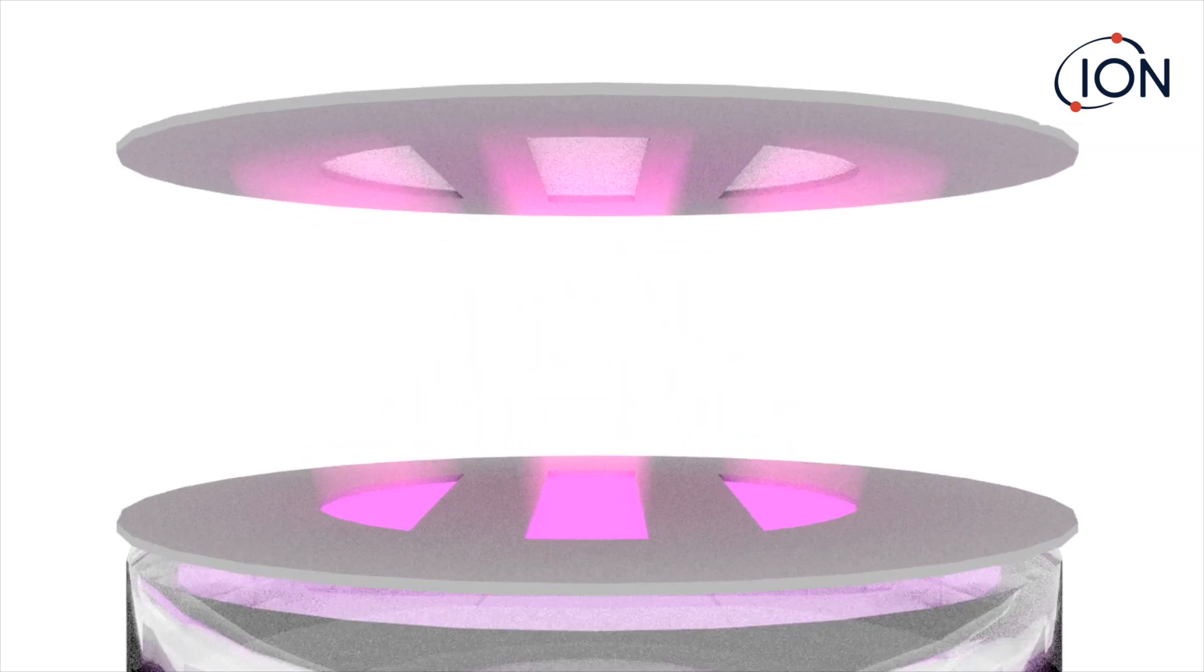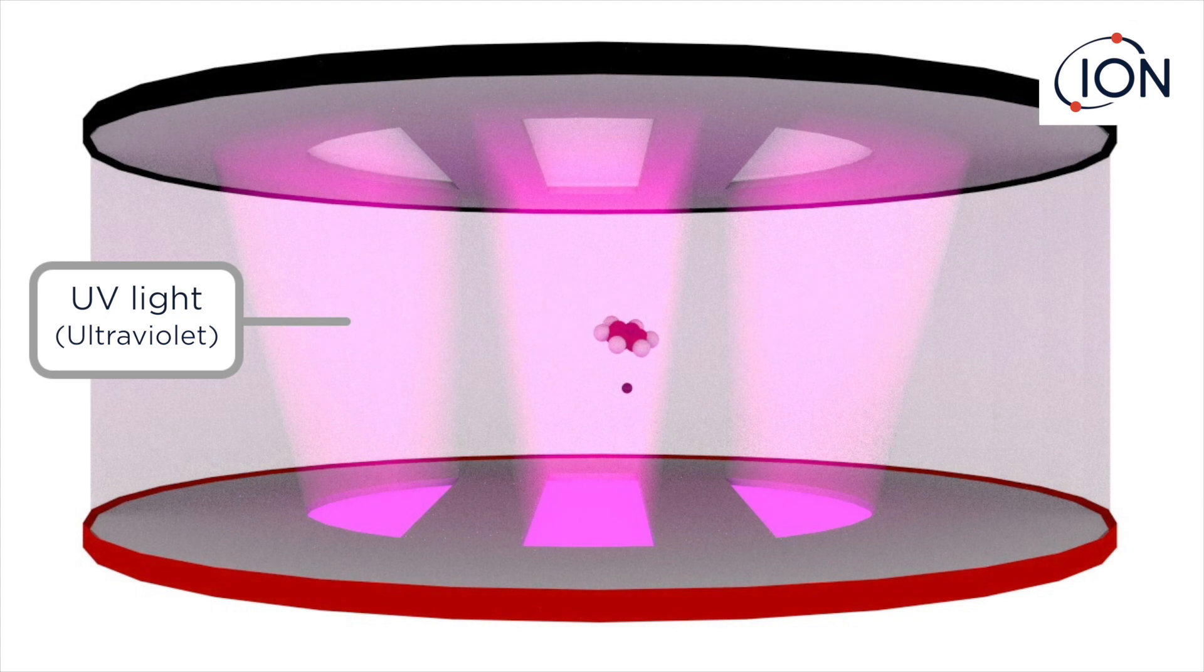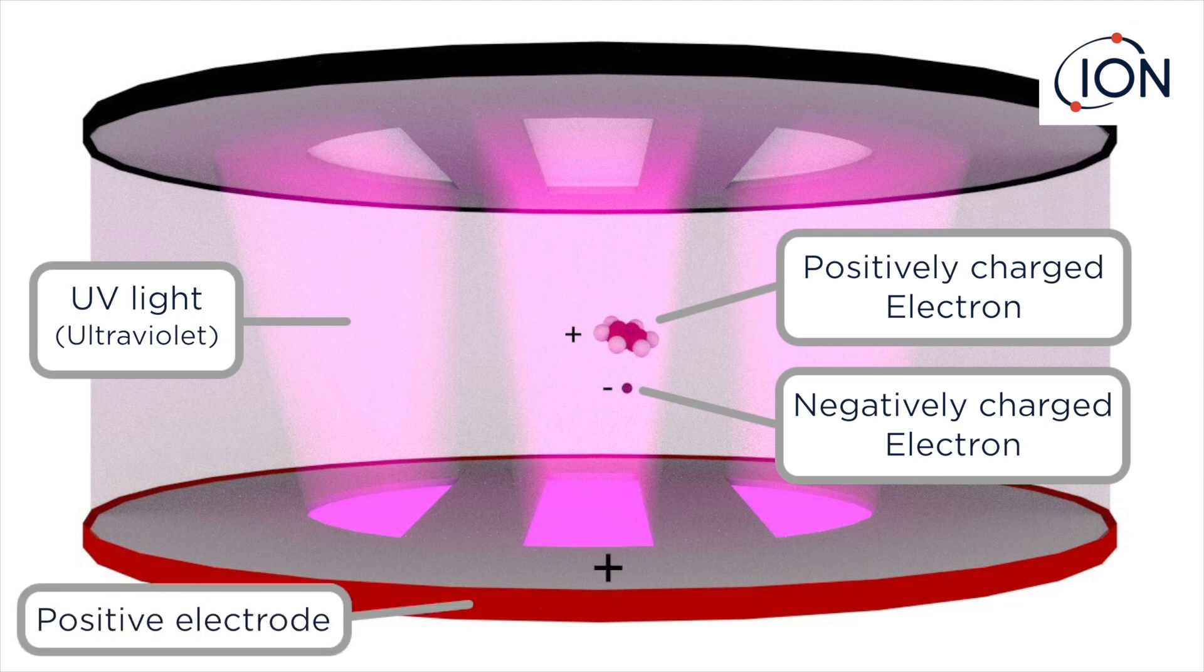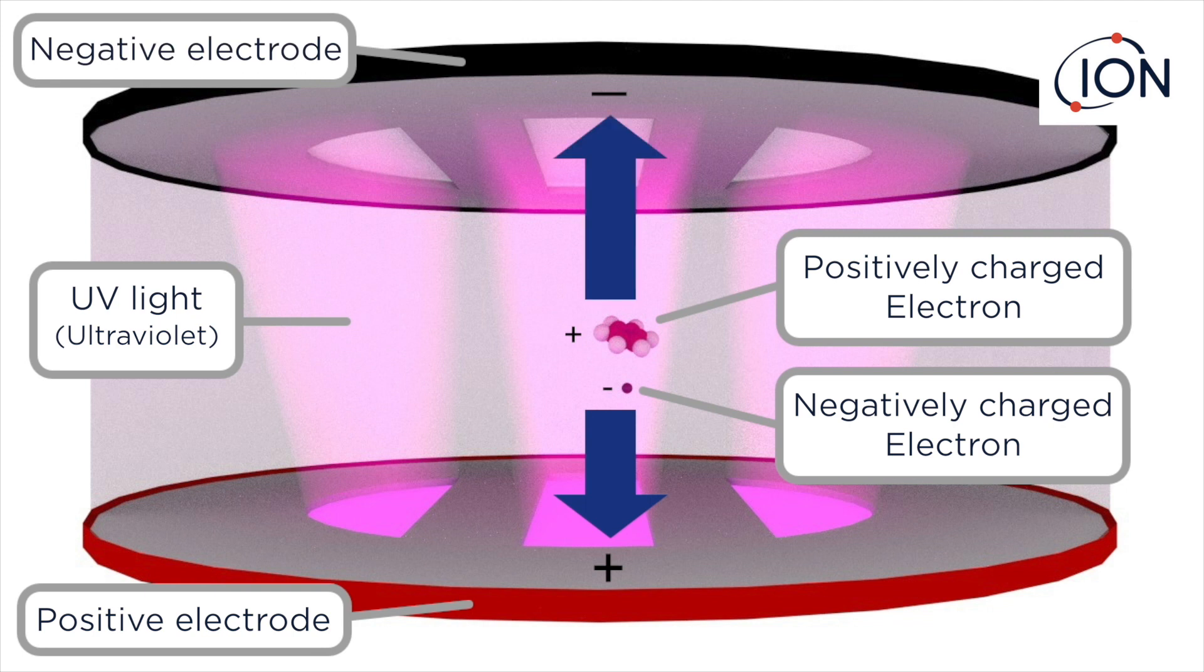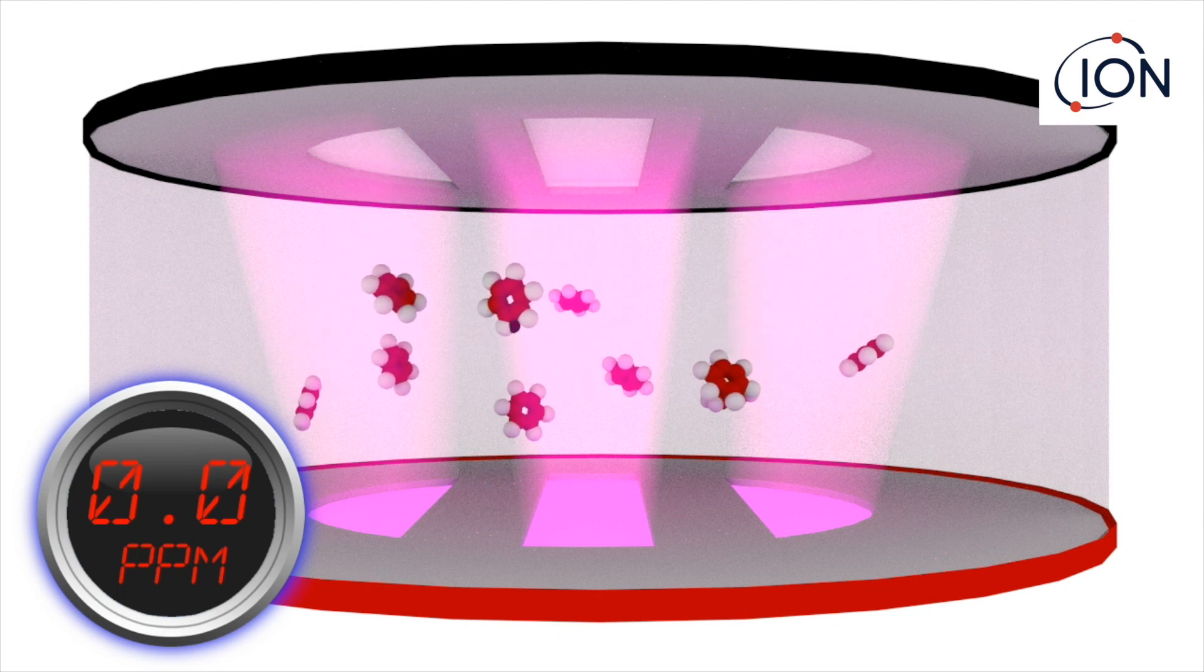When VOC gas enters the detection chamber, ultraviolet light energizes the molecules, releasing negatively charged electrons. The VOC molecules therefore become positively charged. The negatively charged electrons are attracted to the positive electrode, while the positively charged molecules are attracted to the negative electrode. This results in the generation of a tiny electrical current that increases with gas concentration.